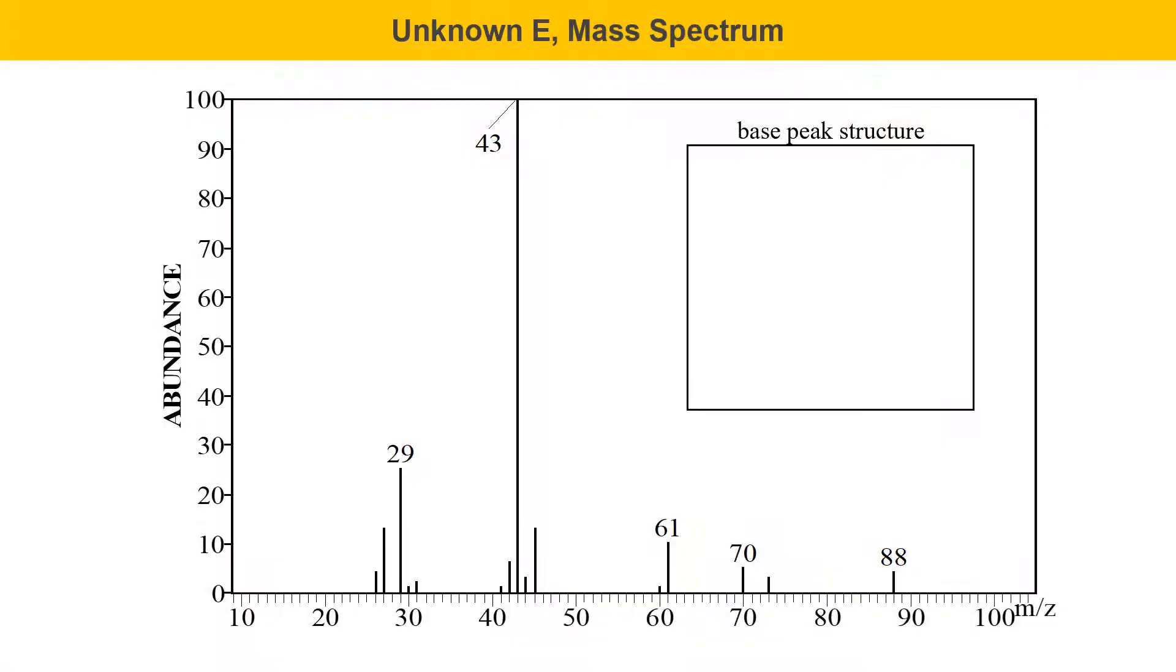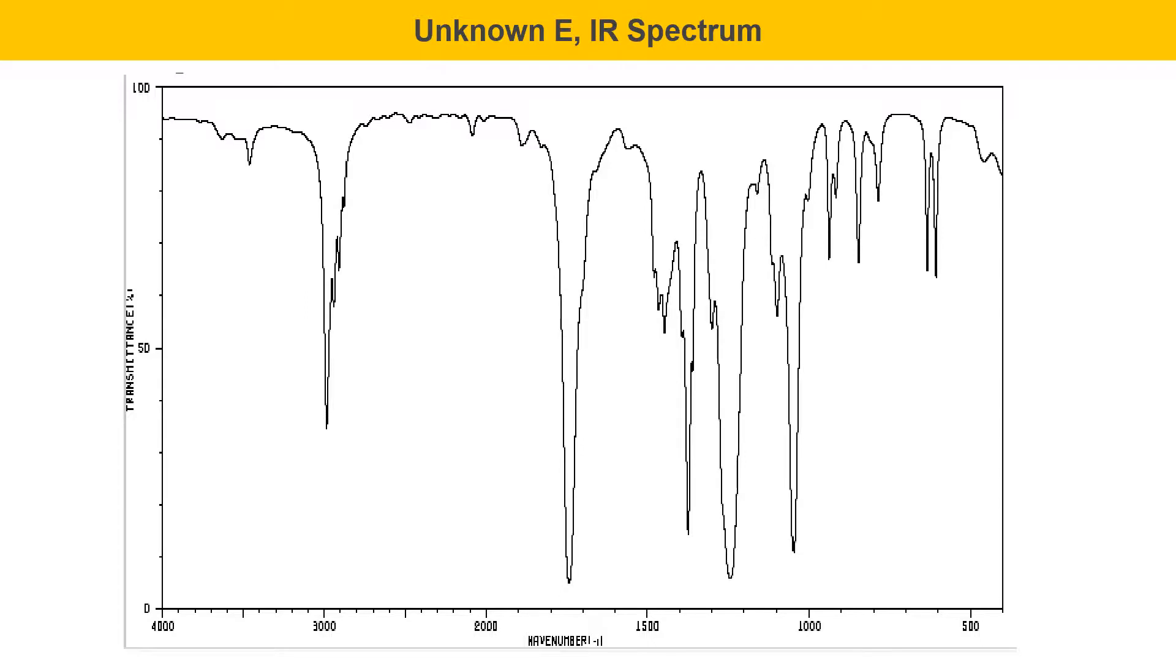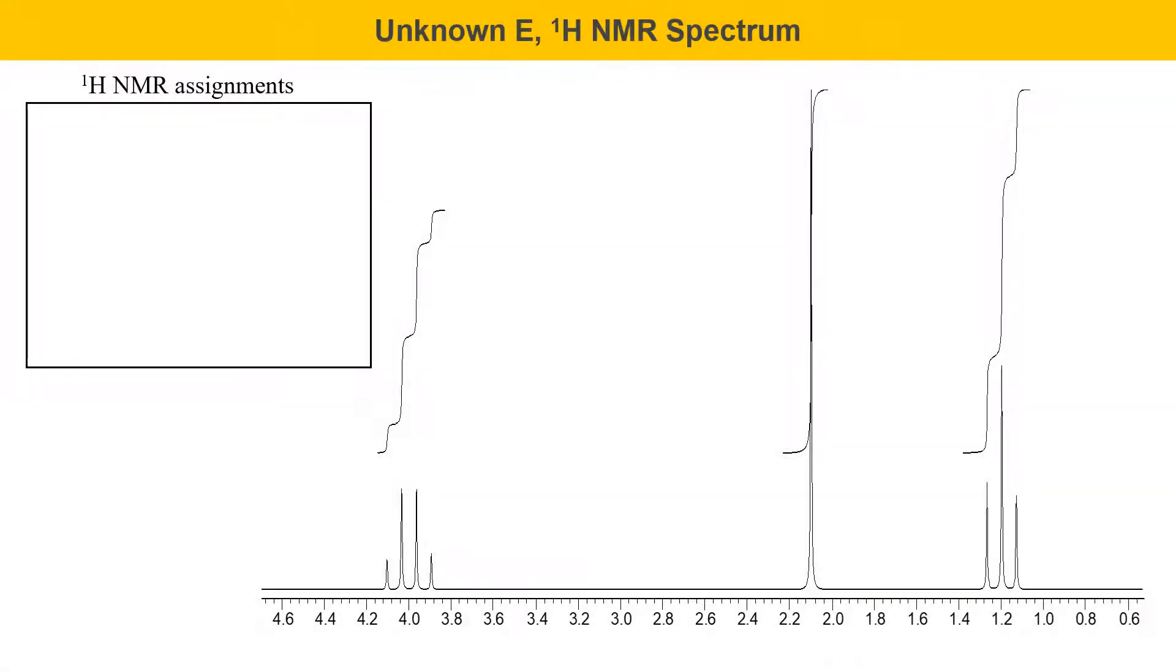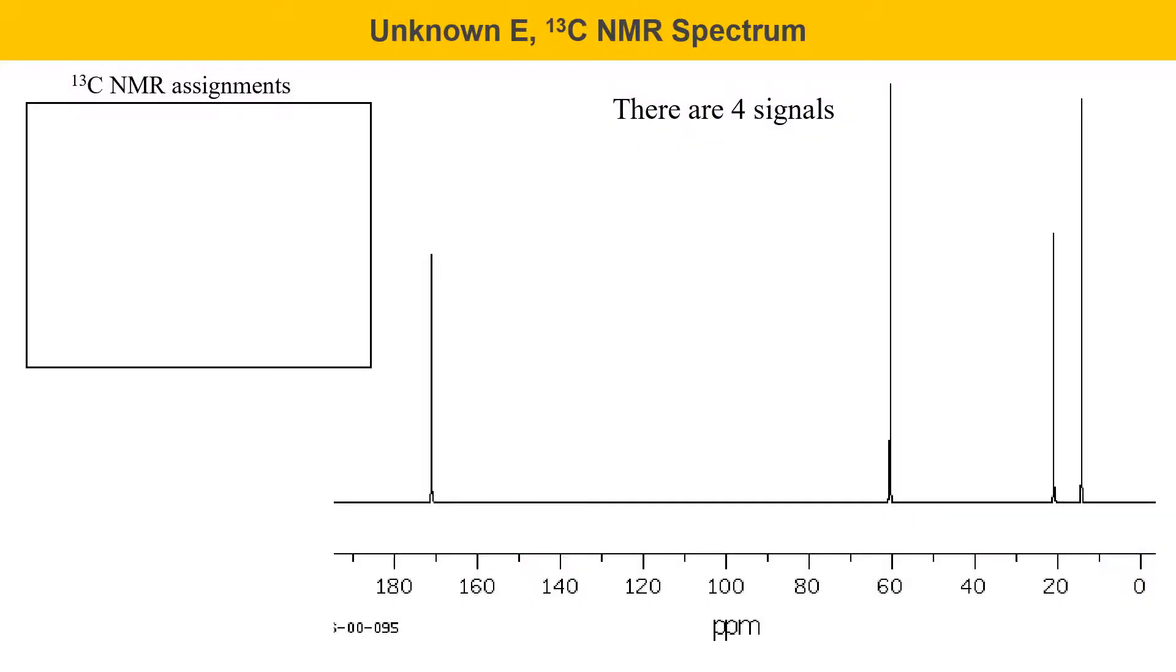Here's the mass spectrum of unknown E. This is a new unknown that we're going to be looking at. Here's the IR spectrum of unknown E. There's one especially strong signal in the fingerprint region just above 1,200 wave numbers that could be significant, in addition to the peaks in the functional group region. Here's the proton NMR spectrum of unknown E. The carbon NMR spectrum for unknown E is shown here. It has four signals. That means there's four unique types of carbon.